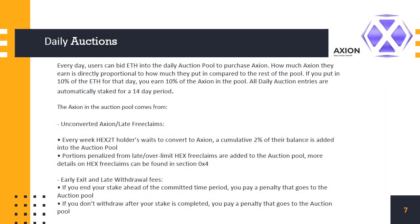The daily auction: putting tokens and value into your pocket. To get Axion, it needs to be claimed by HEX2T holders. The longer they wait to claim, the more penalties they face — about 2% of their total per week. This 2% is added into a daily auction pool where people can bid using ETH on the AXN tokens within it. If you bid 10% of the ETH on that day, you get 10% of the pool rewards.